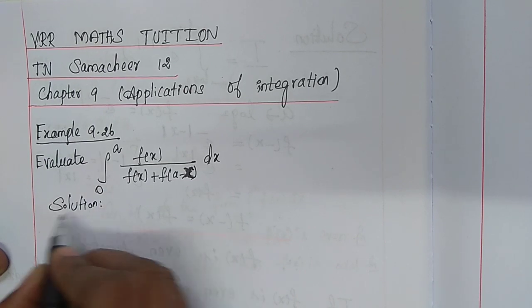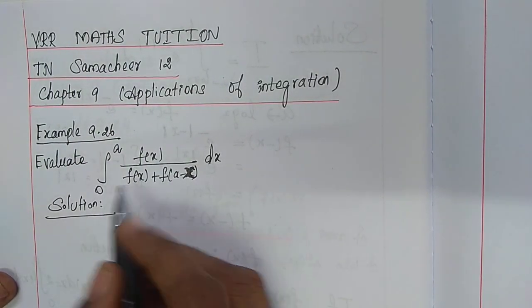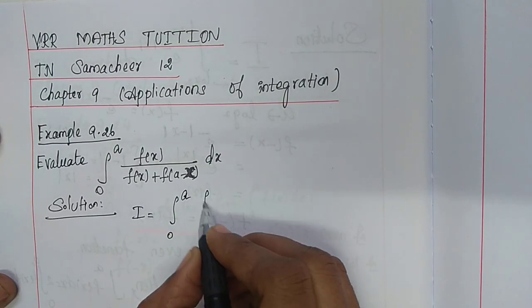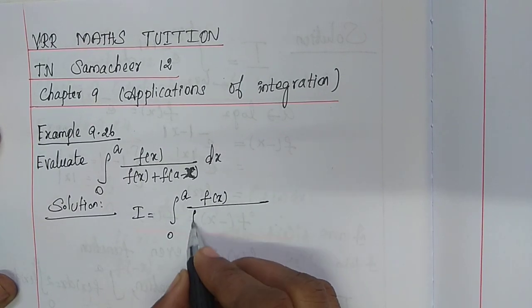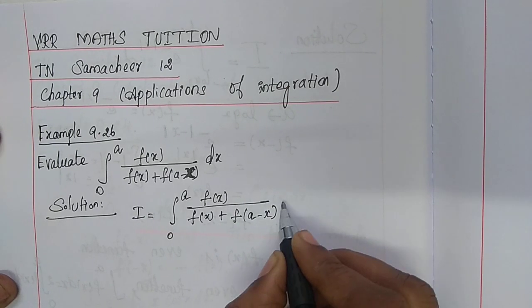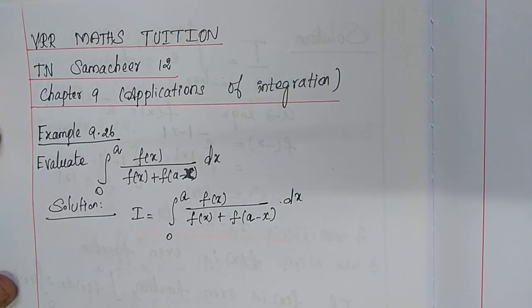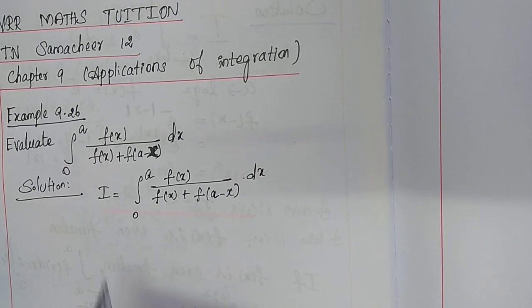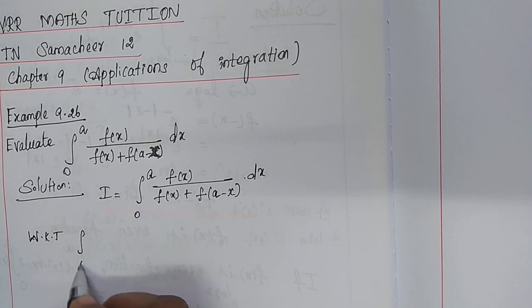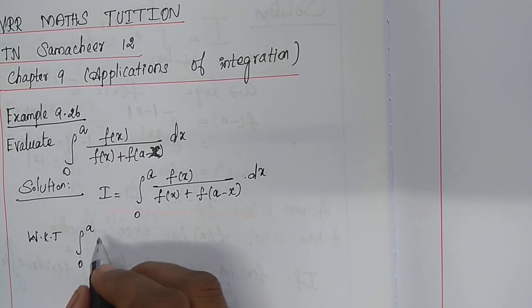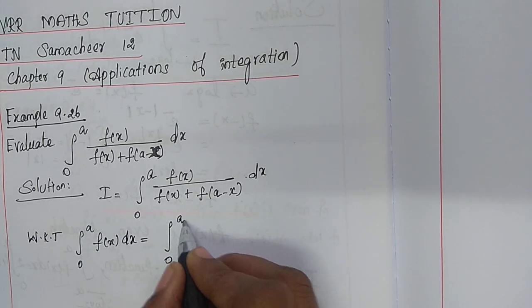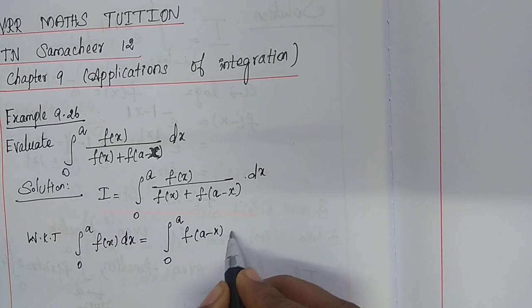Solution. First, write the given integral as i. Therefore, i is equal to the integral from 0 to a of f(x) divided by f(x) plus f(a minus x), dx. We know the property that the integral from 0 to a of f(x) dx equals the integral from 0 to a of f(a minus x) dx.